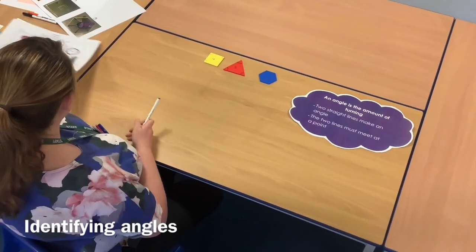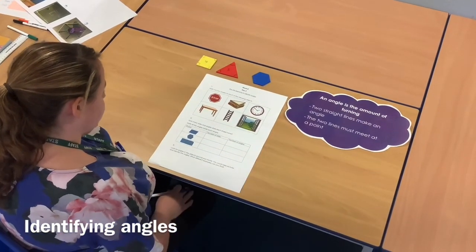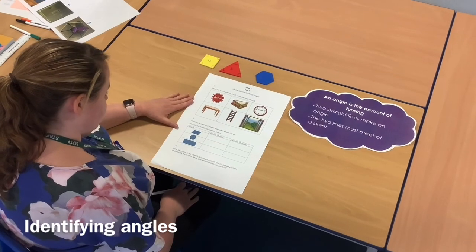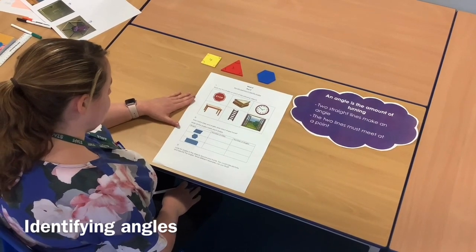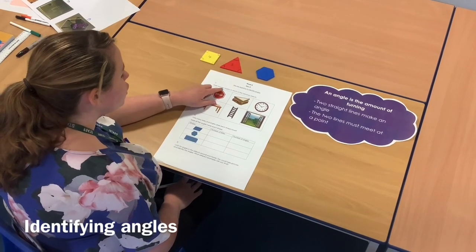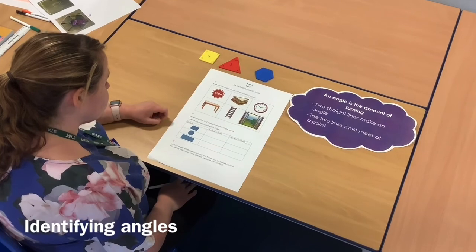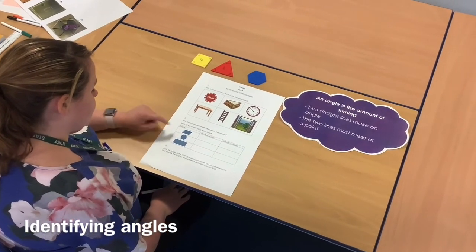Now it's your turn. So today for your task, which you can find a copy of on the learning PowerPoint, I've set you three questions to complete. So question one, can you mark on just two angles on the pictures that I put here? Question number two, I've given you three different shapes.